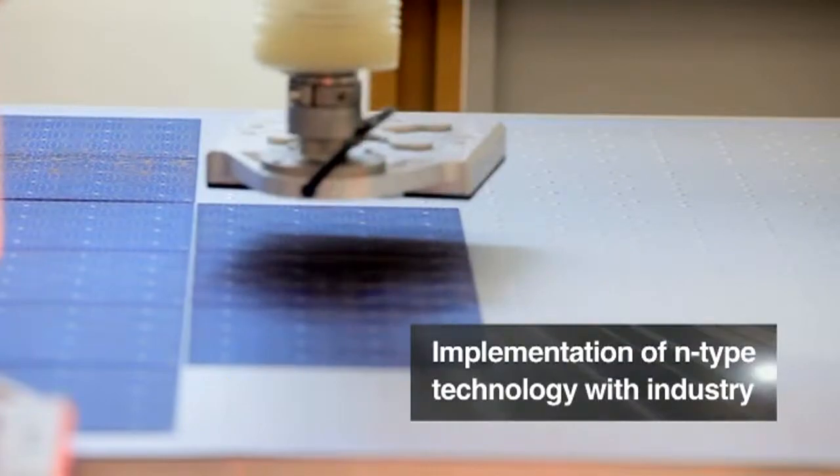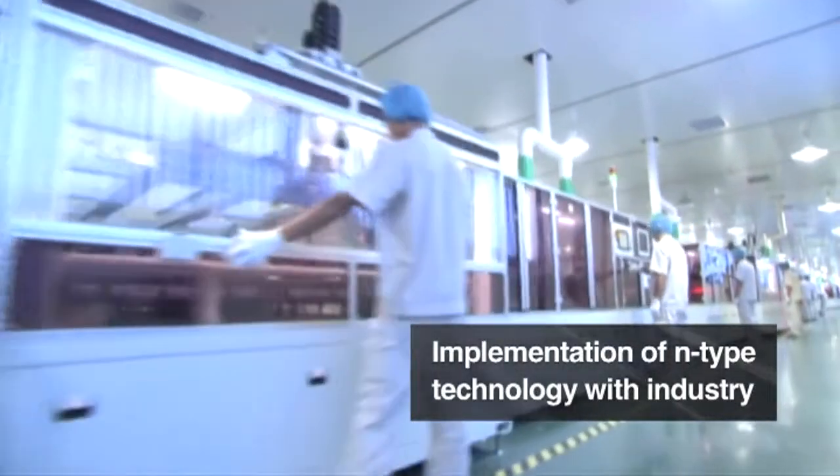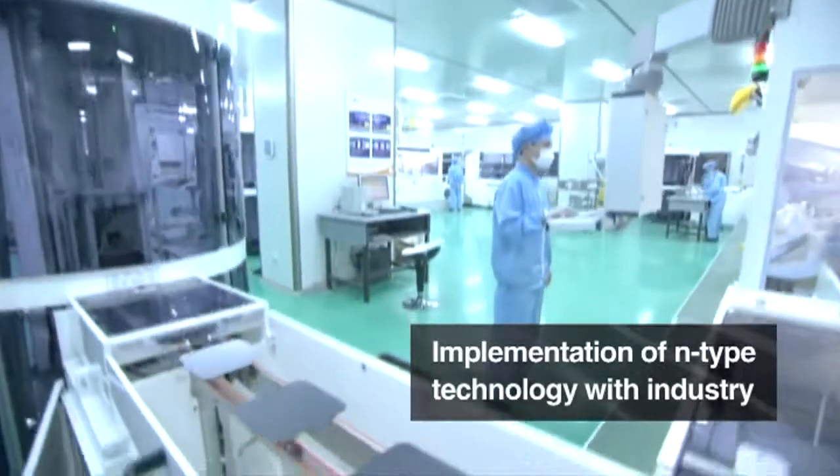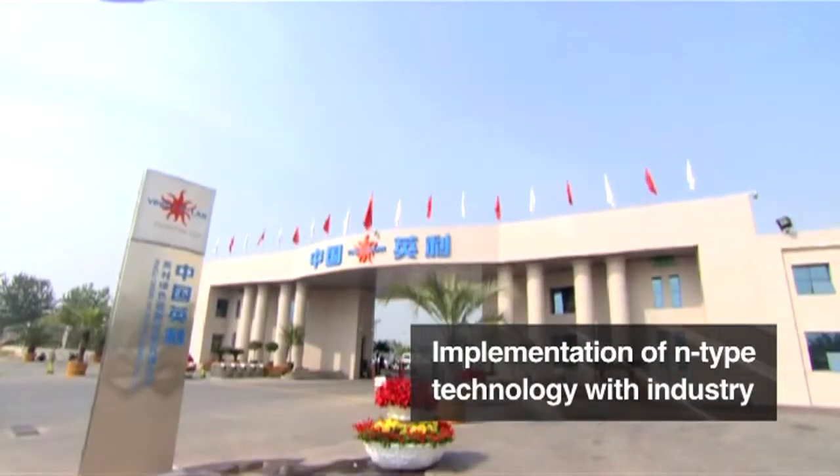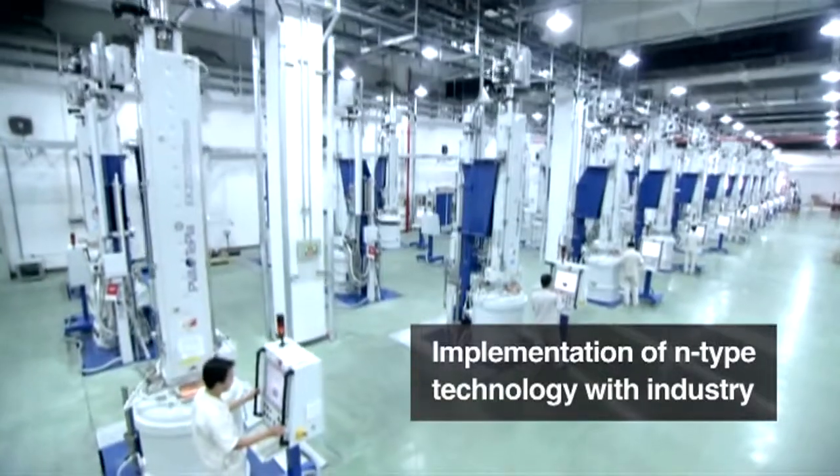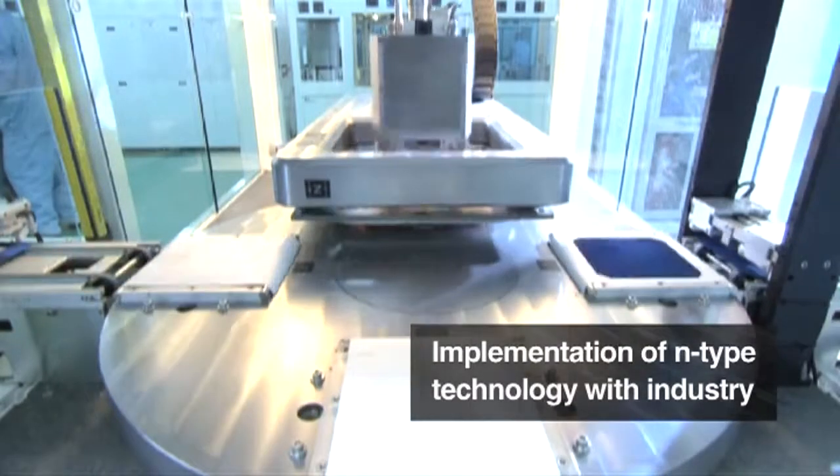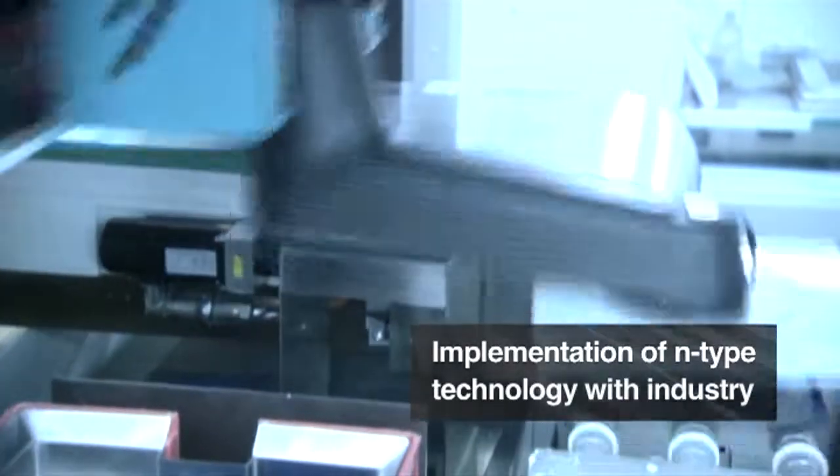Also, ECN developed a new type of solar cell based on N-type wafers. Yingli Solar, Tempress Systems, and ECN brought this technology in one year from lab to fab under the brand name Panda.